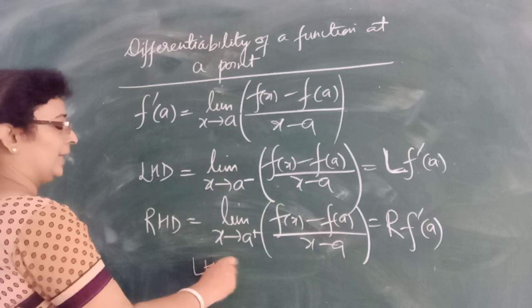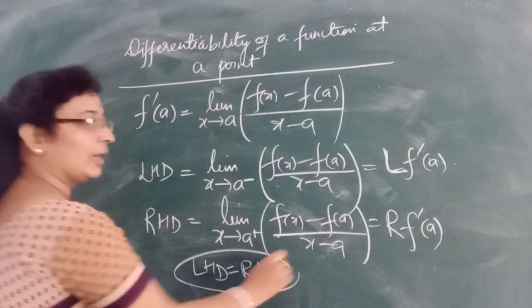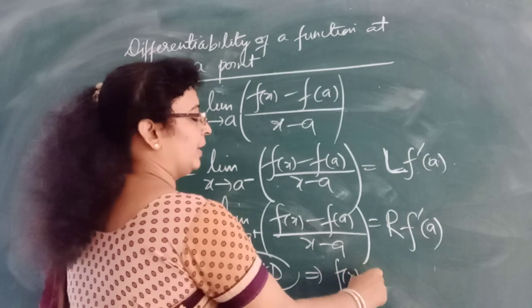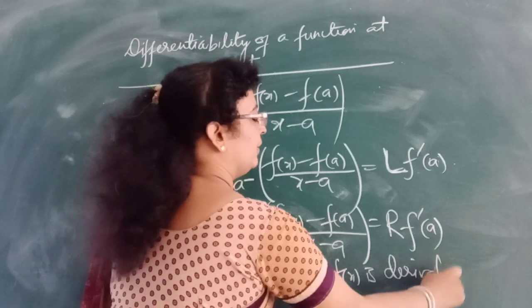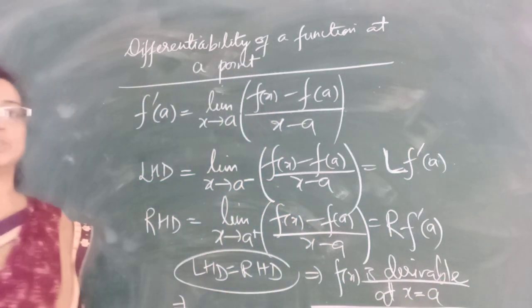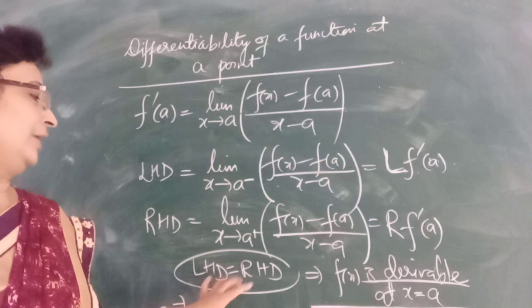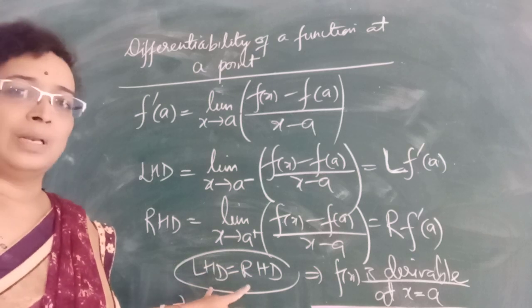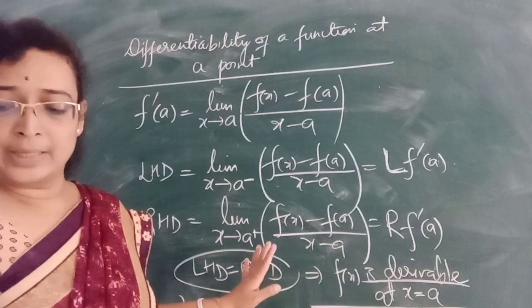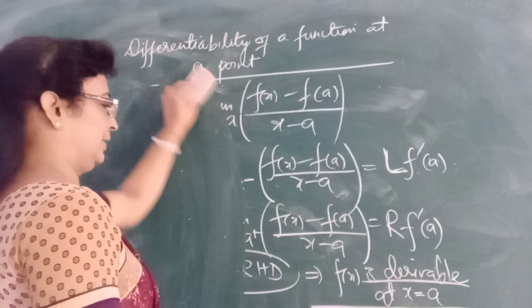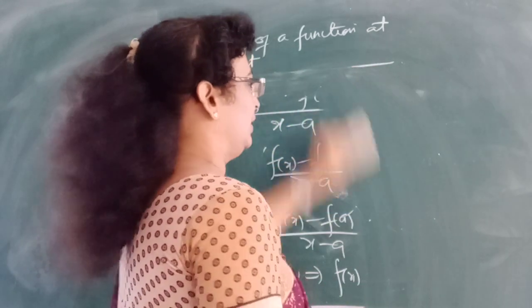If both the left-handed and right-handed derivative values are equal at x = a, then we can say that function f(x) is derivable at point a. If these two values are not equal, then we say that the function is not differentiable at x = a. This is the concept used to check the derivative at a point.